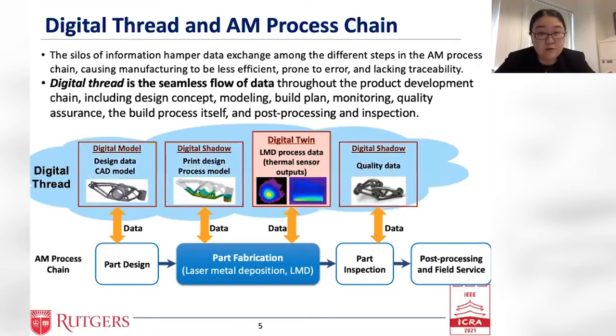Since many variables and uncertainties intertwine in affecting machine performance and product quality, the quality of the part is not easily predictable. For functional parts, even a single print failure of a metal part may cost $1,000 and cause a company to miss production targets. So how to harness the data from every step of the AM process chain, powered with data science, is urgent but promising to make AM transparent and optimized, leading to quality functional parts.